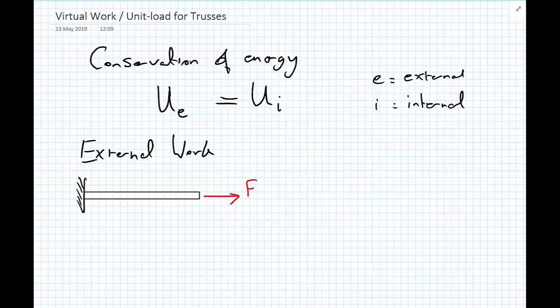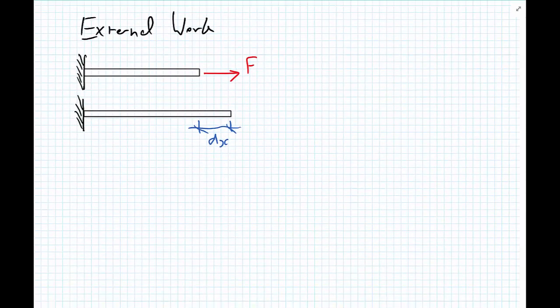And as a result of applying the external force F, my bar will have extended. It might have also got slightly thinner as well due to Poisson's ratio. So our bar has now extended due to having this force F on it by a small amount that I'm recalling dx. And we're going to state the definition of work. So work equals force times distance.